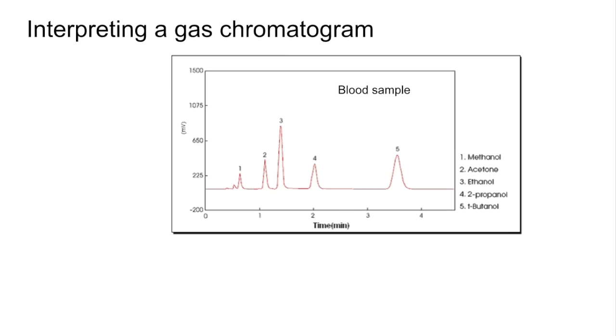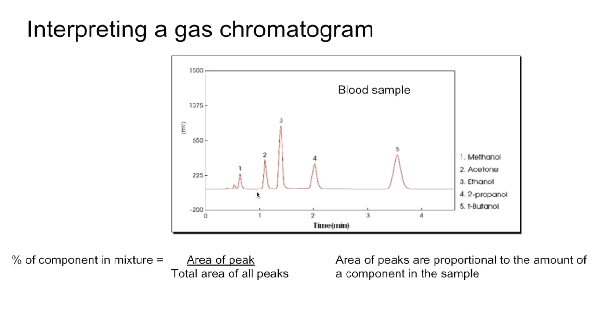Here's a typical gas chromatogram of a blood sample. This could be used for drink-driving evidence. You can see peak number three is for ethanol. We can measure the percentage of the component in the mixture by measuring the area under a particular peak and dividing that by the total area of all the peaks. The area of the peak is proportional to the amount of the component in the sample.